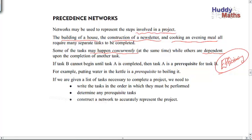So if task B can't begin until task A is completed, then A is a prerequisite, there's a word, required to be done before, pre. So how do we do this? Well, putting water in a kettle is a prerequisite to boiling it. So how do you do it? Well, let's list the tasks to complete the project, write the tasks in the order they have to be performed, determine any ones that have to come before the others, and then do a network. And then we have a plan. Good to have a plan if you're doing something fairly complicated.